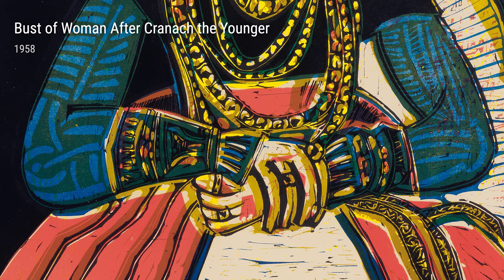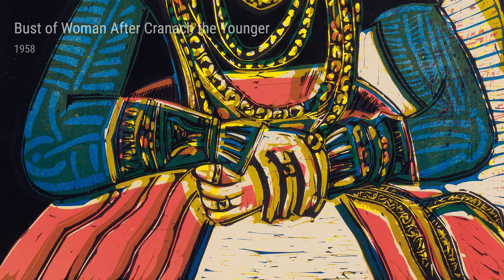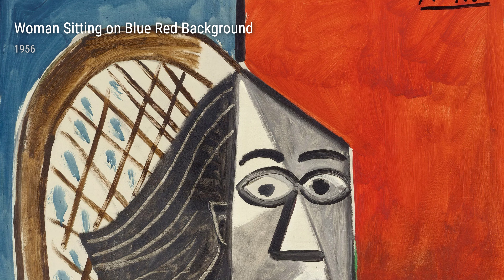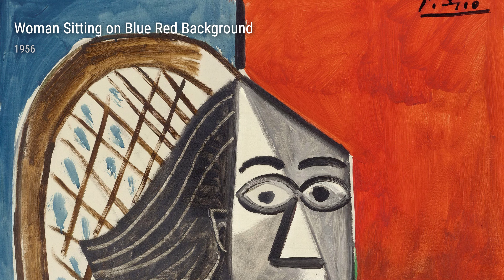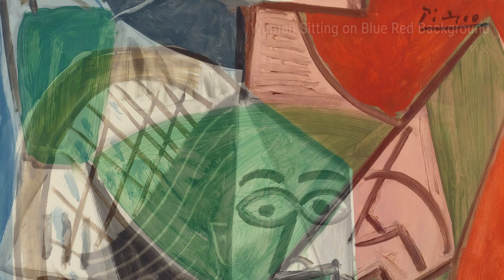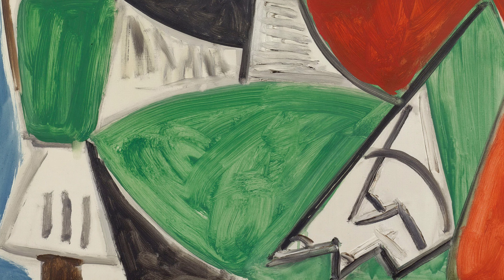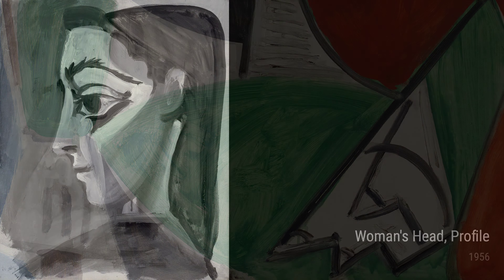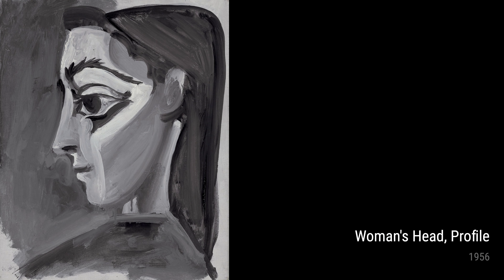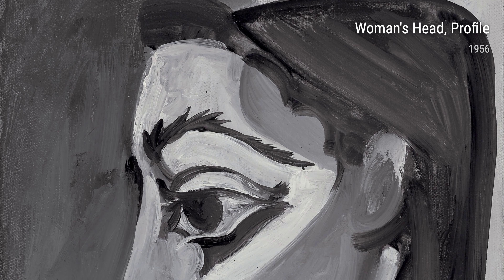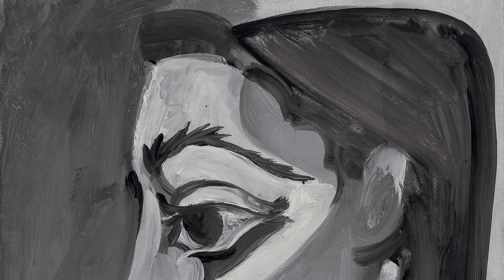Fast forward to the late 1950s and early 1960s, and we see Picasso's exploration of new artistic ideas. One of his famous works from this period is The Bust of Woman after Grenache the Younger from 1958, which showcases Picasso's experimentation with Cubism, where he breaks down the subject into geometric shapes and angles.